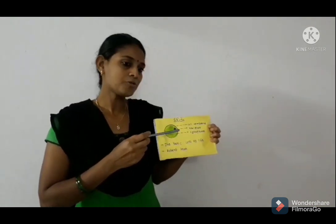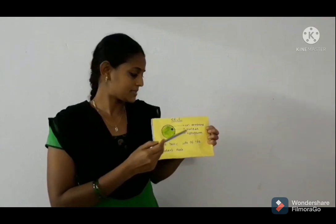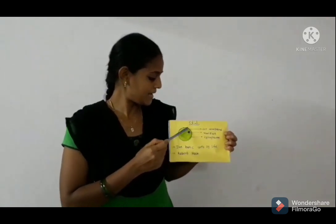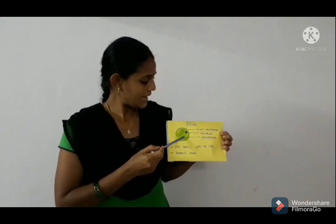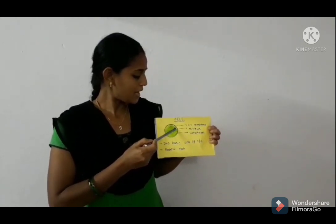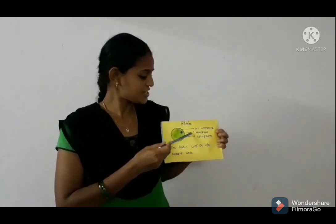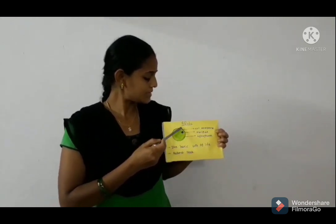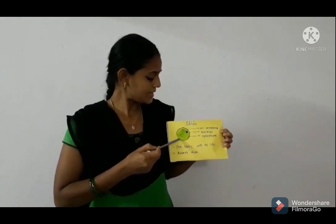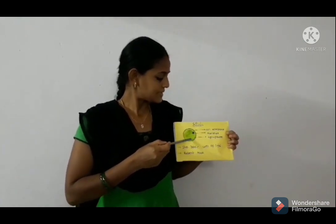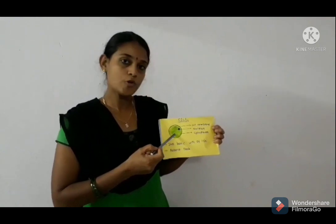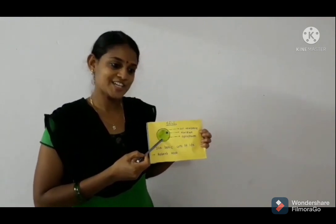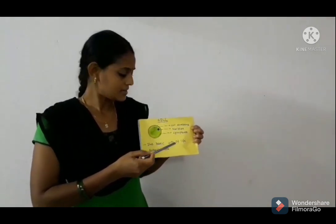Every cell has three parts: cell membrane, nucleus, and cytoplasm. A ball-like structure is called nucleus. The outer membrane of the cell is called cell membrane. And a fluid-like structure in the cell is called cytoplasm.